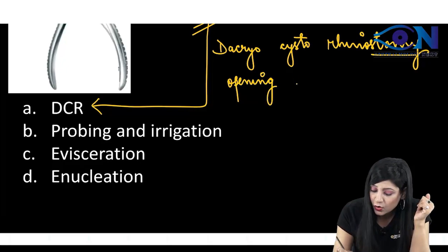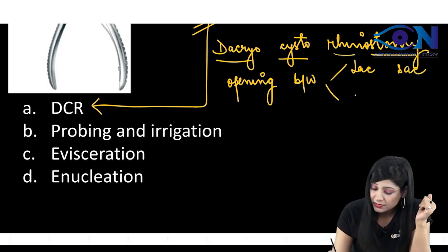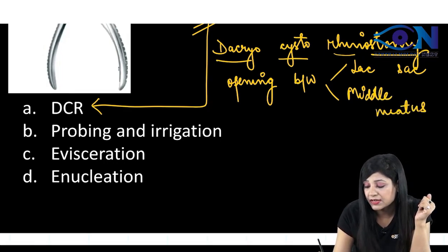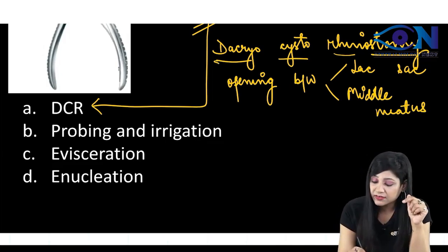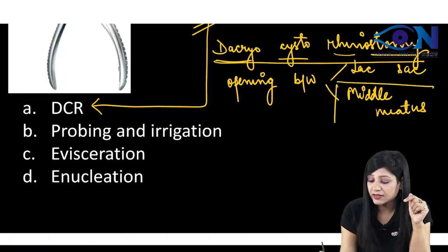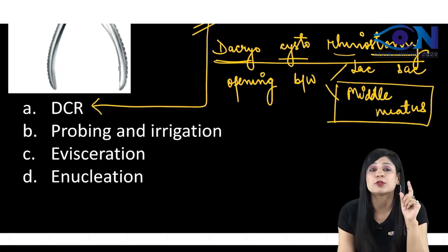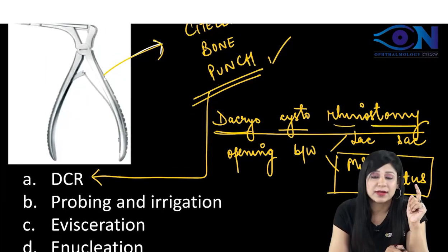Basically we are giving the opening between dacryocyst, that means the lacrimal sac, and rhino means the middle meatus. This is also important that normally it opens in the inferior meatus. But when we are doing dacryocystorhinostomy, we are creating the opening between the lacrimal sac and the middle meatus. For the bone cutting, we are using this siteles bone punch.